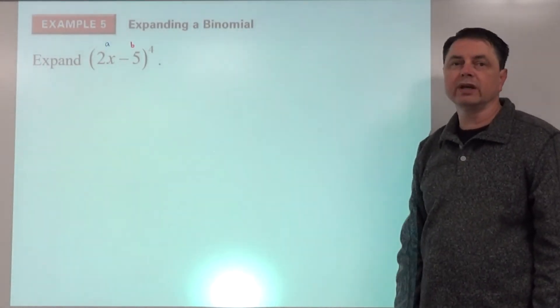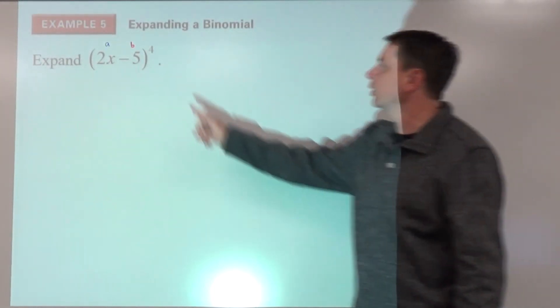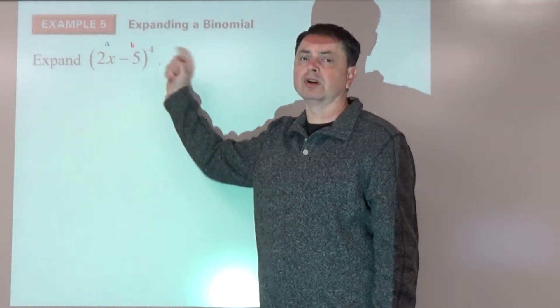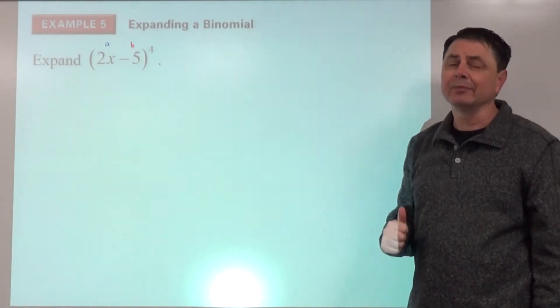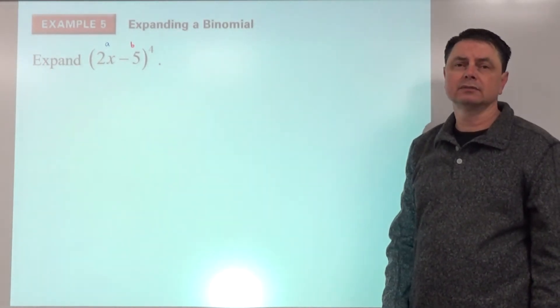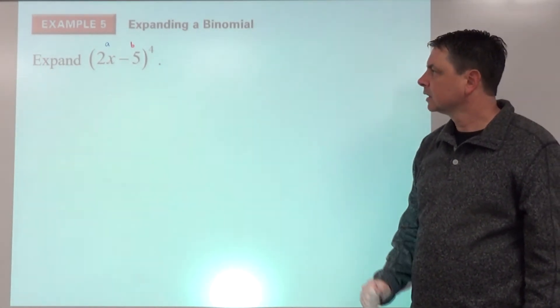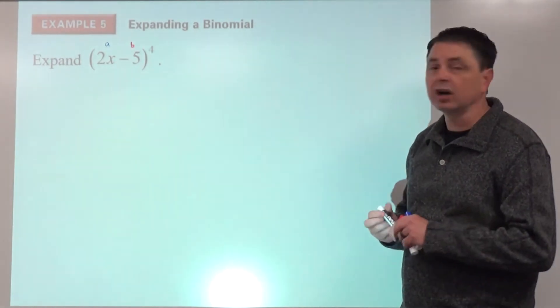Example 5, let's do another one. We're going to see at this point, once we reach an exponent of 4 or higher, the binomial theorem is going to be much more efficient, probably more accurate.